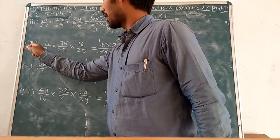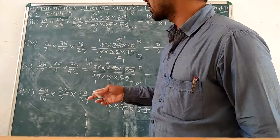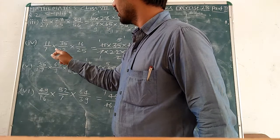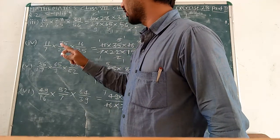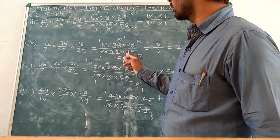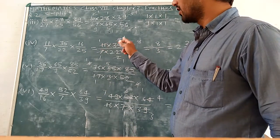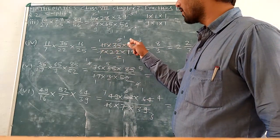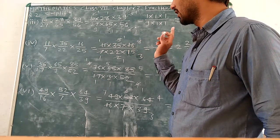Now this is your fourth part, question second. 11 upon 7 multiply 35 multiply 60, which is equal to product of numerator 11 multiply 35 multiply 16.